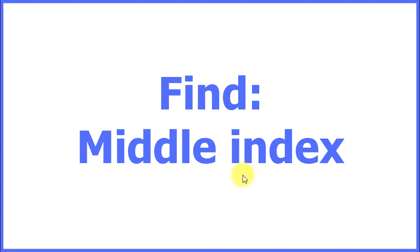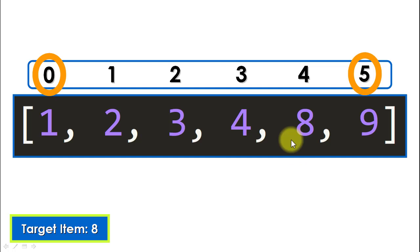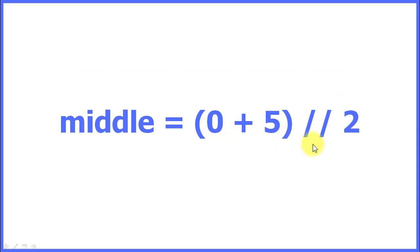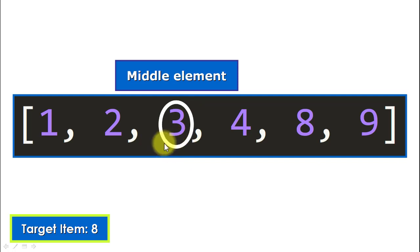The next step is to find the middle index, which is essential for this algorithm. We find it by adding the starting index and the end index of the interval, then dividing by two using integer division — because this must be an index, not a float. In this case the interval goes from zero to five, so zero plus five divided by two using integer division gives us two.